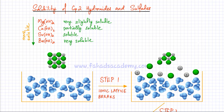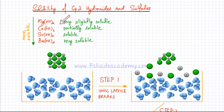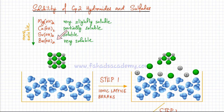If you talk about group 2 hydroxides, then magnesium hydroxide is very, very slightly soluble. It has a pH of almost 7, between 7 and 8, and it only produces very few OH⁻ ions. Calcium hydroxide is partially soluble — its solubility increases significantly compared to magnesium hydroxide. Strontium hydroxide is soluble, and barium hydroxide is even more soluble. The general trend is that as you move down the group, the solubility of group 2 hydroxides increases.